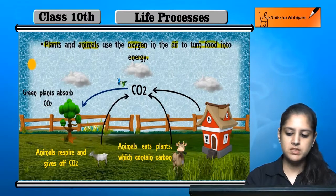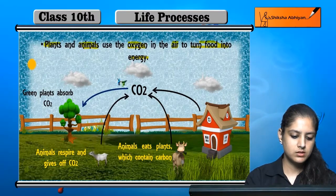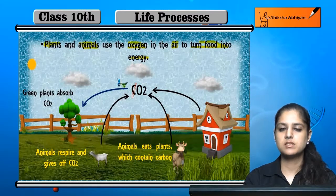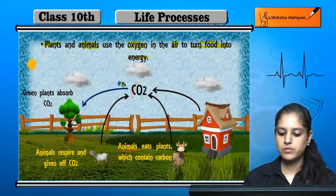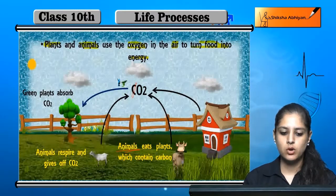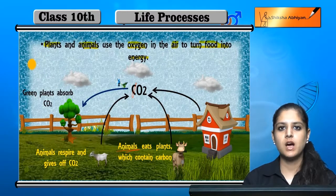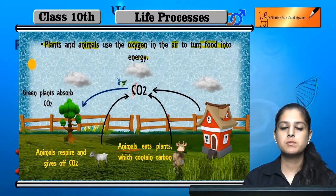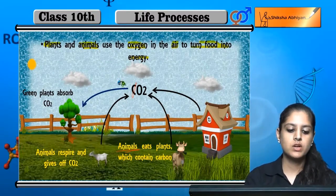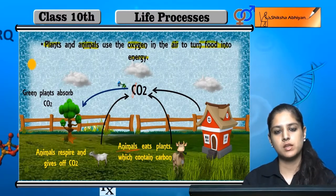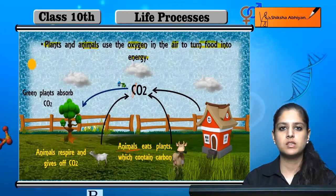Oxygen is present in the atmosphere. Animals eat plants, and ultimately the plants carry out respiration through carbon dioxide. Green plants contain chlorophyll. So everything does respiration — it is a complete cycle.